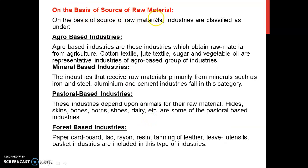On the basis of source of raw material, the first is agro based industry. Agro based industries are those which depend on agriculture for their raw material — for example, cotton textile and jute textile. Mineral based industries are those which depend on minerals for their raw material — for example, iron and steel, aluminum industry. Pastoral based industries depend upon animals for their raw material. Forest based industries are those which depend on forest for their raw material — for example, paper, cardboard, and furniture.